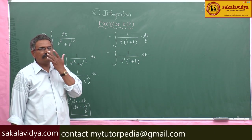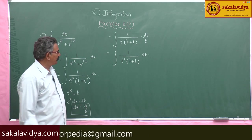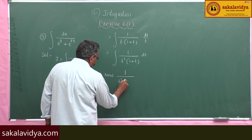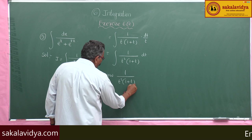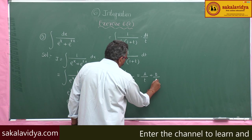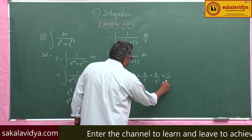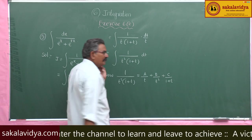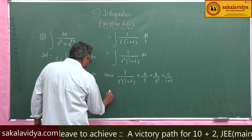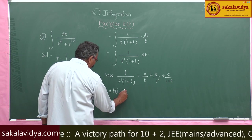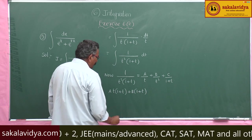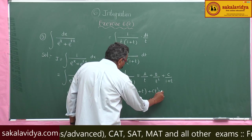Now we find the partial fractions of 1/[t²(1 + t)]. Let 1/[t²(1 + t)] equal A/t + B/t² + C/(1 + t). Multiplying both sides by t²(1 + t) gives: A·t·(1 + t) + B·(1 + t) + C·t² equals 1.